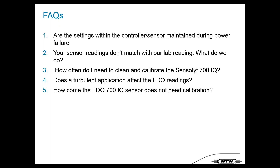Does turbulence affect the FDO sensor? The main application for FDO is the aeration tank, which is a turbulent environment. The effect of turbulence is more or less zero. You may have a slight influence from bubbles, but in an aeration tank the effect will be less than 0.1 mg/L — very hard to detect. Don't worry about turbulence or air bubbles.